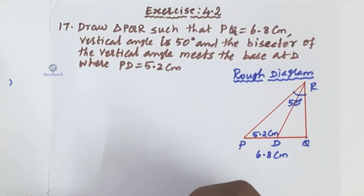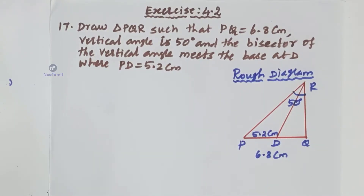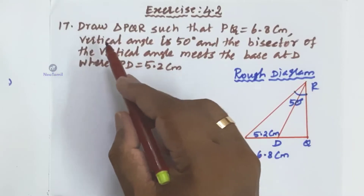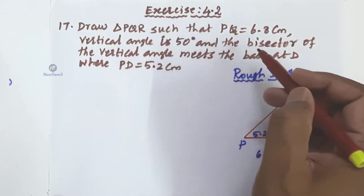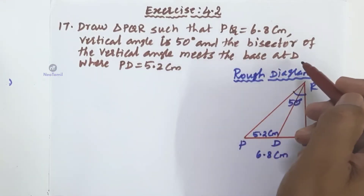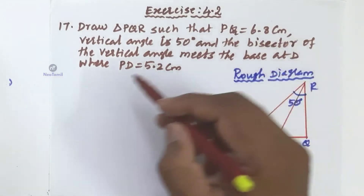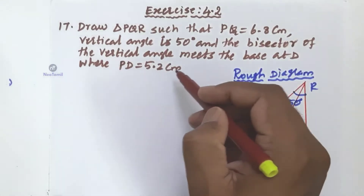The concept is construction of triangle. In the construction of triangle, we have the angle bisector concept. We have the base of the triangle and vertical angle given, and the point on the base where the bisector of the vertical angle meets the base. The data is given. Exercise 4.2, question number 17: draw triangle PQR such that PQ equal to 6.8 cm, vertical angle is 50 degrees, and the bisector of the vertical angle meets the base at D, where PD equal to 5.2 cm.